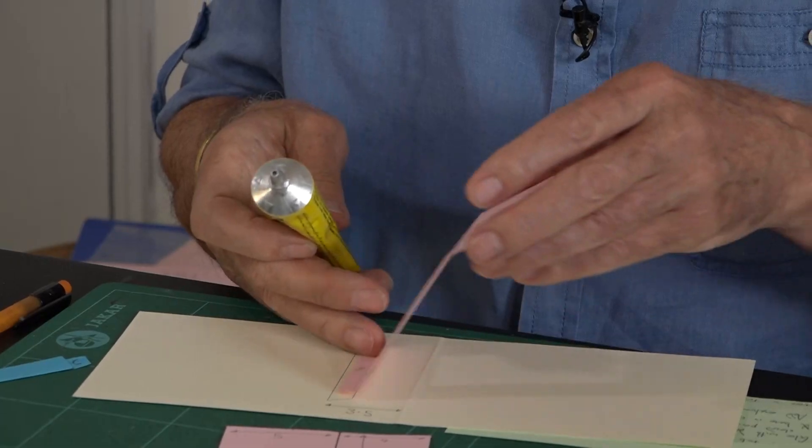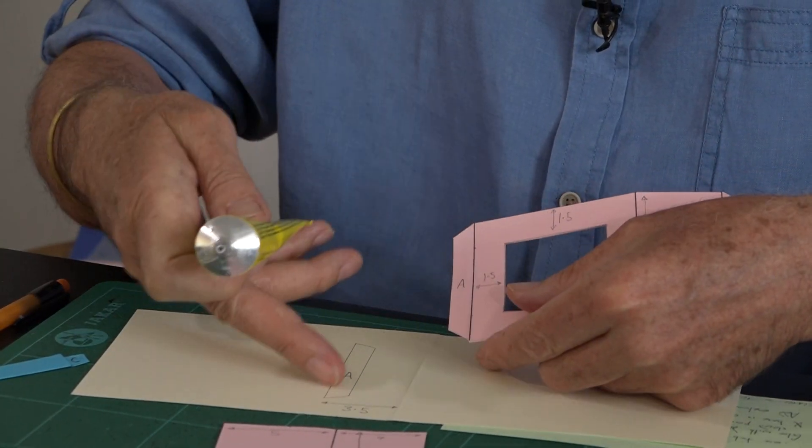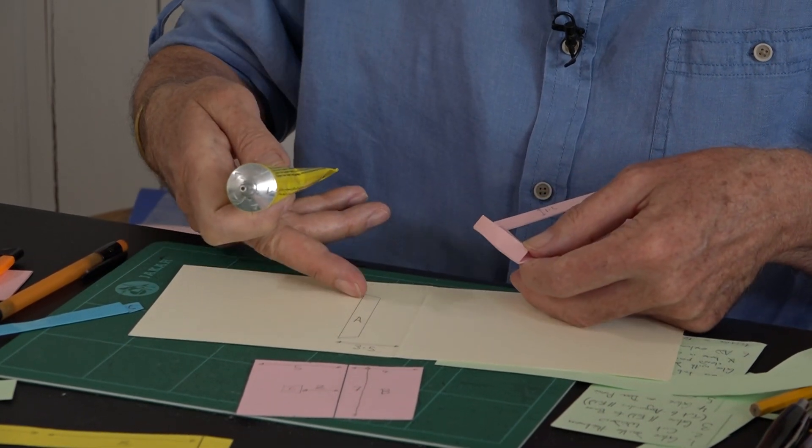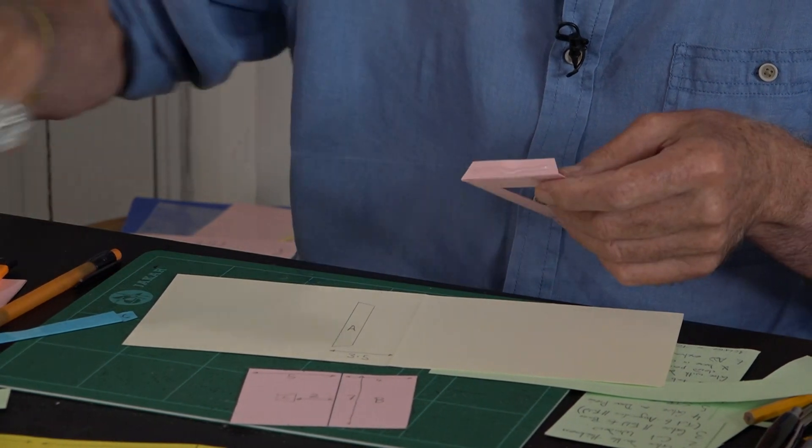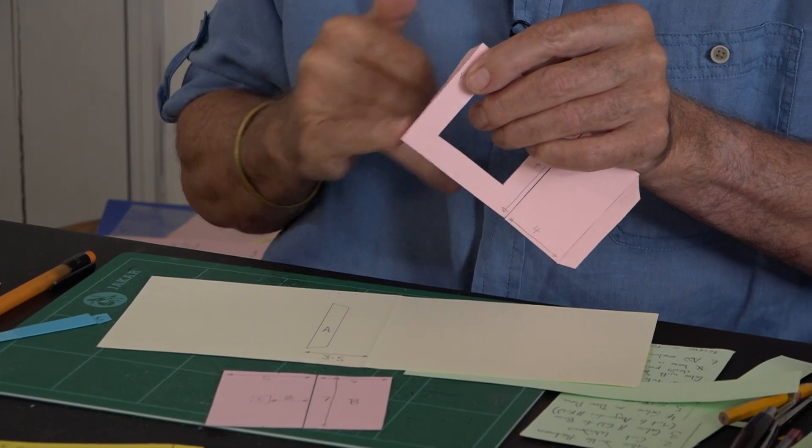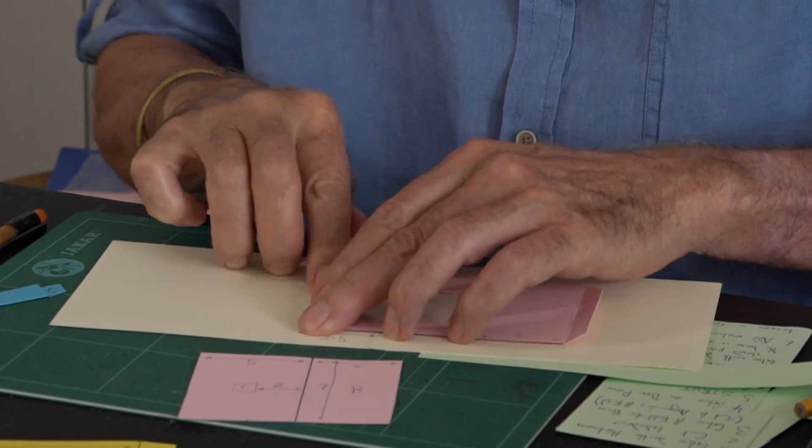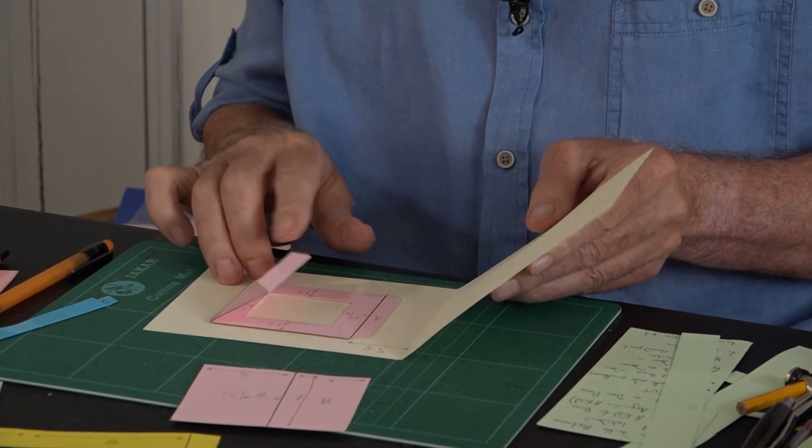Take the base, glue A on first. So A, the long strip—the crease goes 3.5 from the spine. If it was a normal parallelogram, we'd just glue this down with it all flat, but as it's an asymmetric parallel fold, we fold it down like that and then shut this so it'll find its natural place.